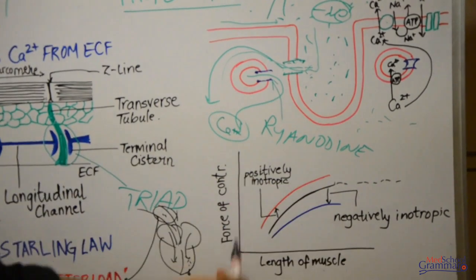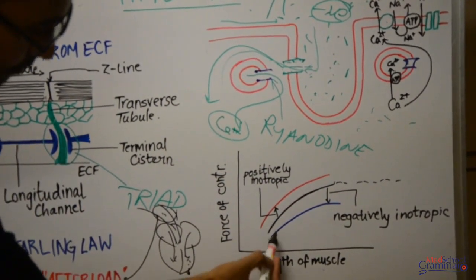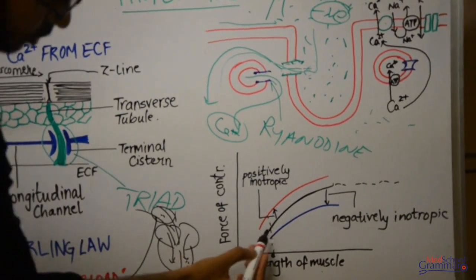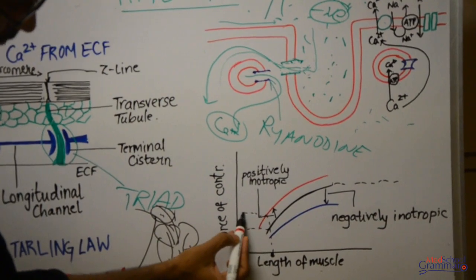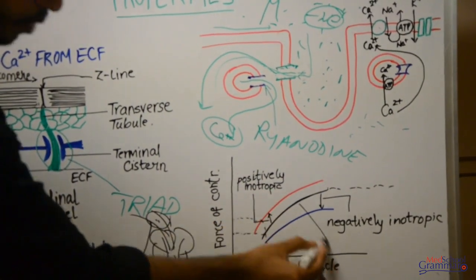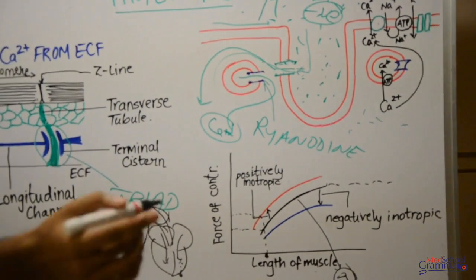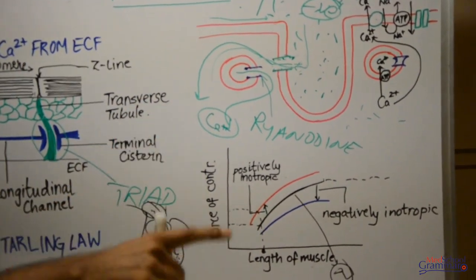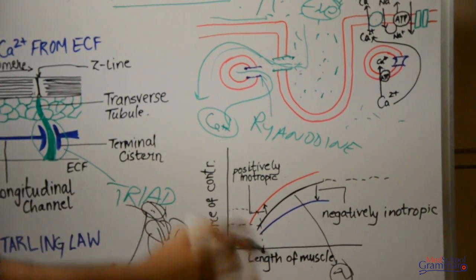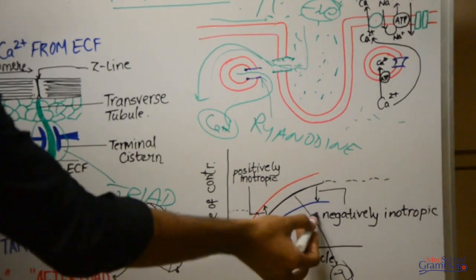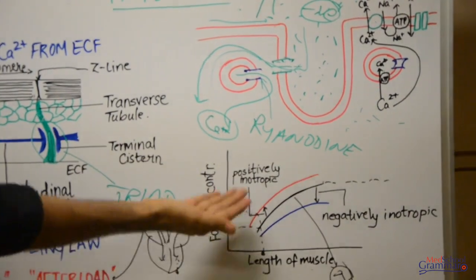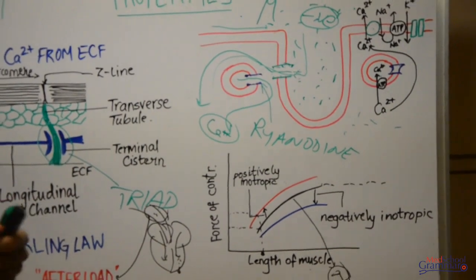The normal curve is the black line. The red curve, shifted upward, indicates a positively inotropic factor has acted — increasing the force of contraction at the same muscle length. The blue curve, shifted downward, indicates negatively inotropic factors — decreased force of contraction at the same length. 'Inotropic' refers to the force of contraction.